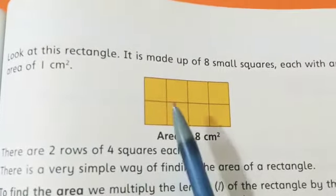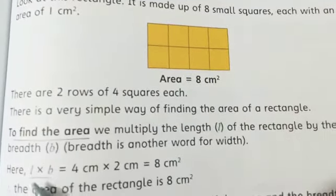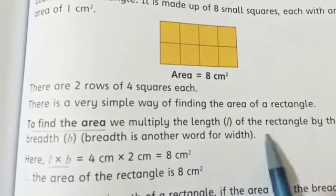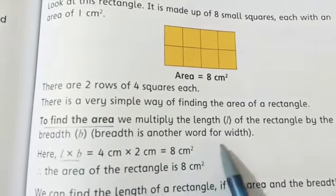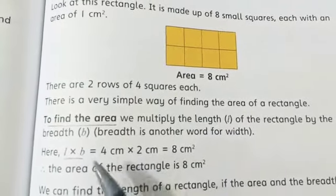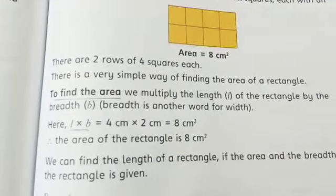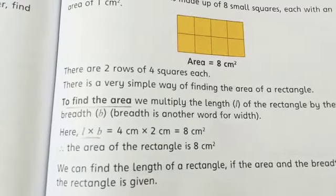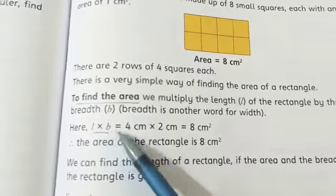Look at this image carefully again. There are two rows of four squares each - first row and second row. To find the area we multiply the length of the rectangle by the breadth. Breadth is another word for width. So we can find the area of a rectangle using the formula: length into breadth.